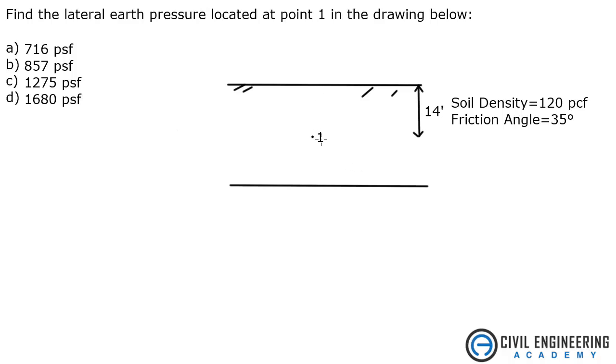So we've got one point here underneath the soil, we've got a density of 120 PCF with a friction angle of 35 degrees and this point is 14 feet below the surface of the soil.